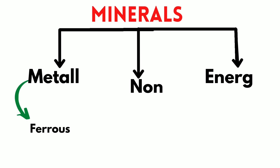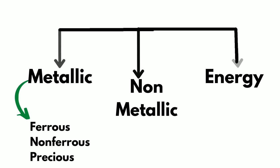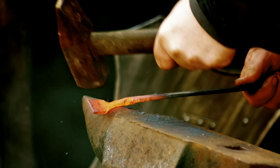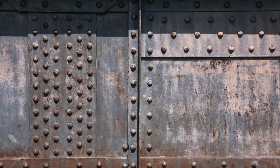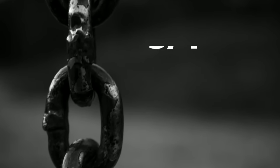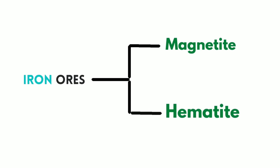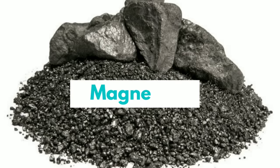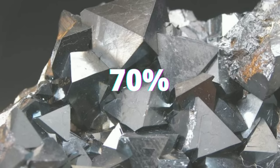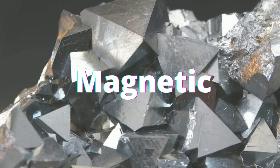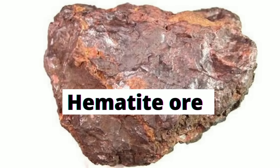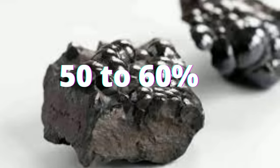First of all, let's talk about the metallic mineral type — ferrous mineral. Ferrous mineral contains a concentration of iron. If we talk about the whole metallic mineral production, three-fourths is produced as ferrous mineral. The most important examples are iron ore and manganese ore. Iron ore is divided into magnetite and hematite. Magnetite is the finest ore and has excellent magnetic quality. In hematite, there is approximately 50-60% iron content, which is in high demand in the industrial sector.